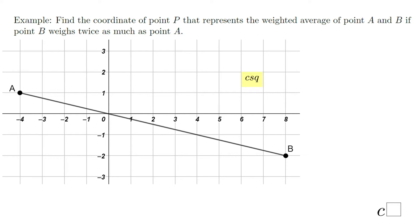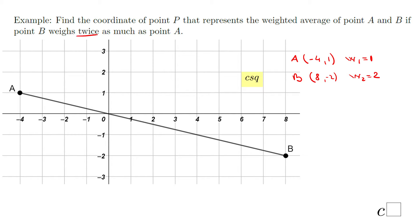Find the coordinate of point P that represents the weighted average of points A and B, if point B weights twice as much as point A. Point A is located at negative 4 and 1, and the weight will be 1. Point B is located at 8 and negative 2, and it has a weight of 2.